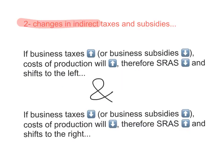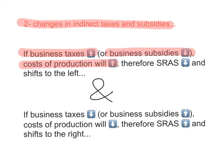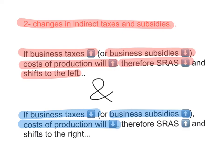The second factor is changes in indirect taxes and subsidies. If business taxes rise, or if business subsidies fall, costs of production will rise — because indirect taxes increase costs of production while subsidies decrease them. Therefore, short run aggregate supply will decrease and the curve will shift to the left. The opposite is also true: if business taxes fall or business subsidies rise, costs of production will fall, and short run aggregate supply will increase, shifting the curve to the right.